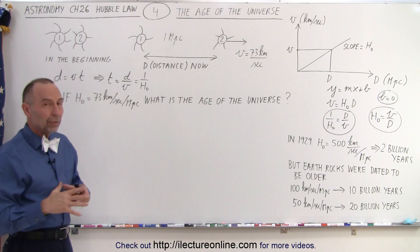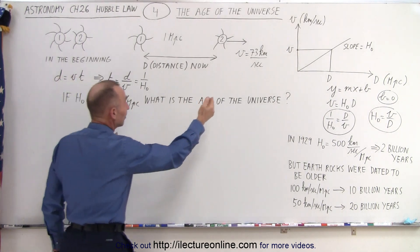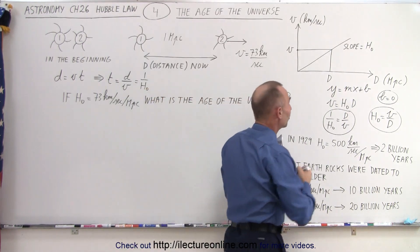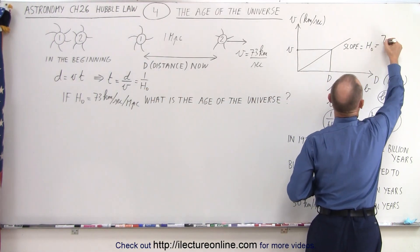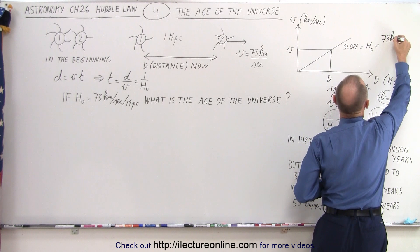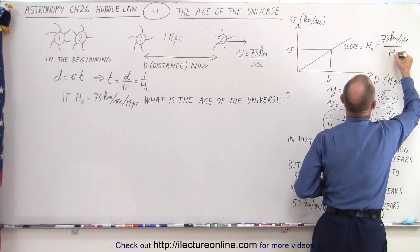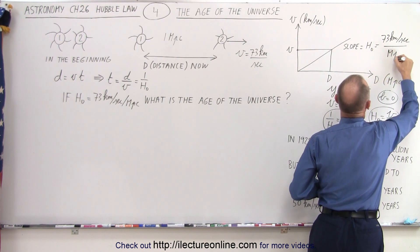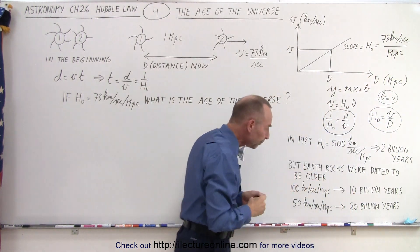So what we're going to do now is calculate that with an example. Let's say that the Hubble constant is 73 km per second per megaparsec. We're going to assume that is the current correct value.